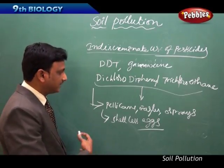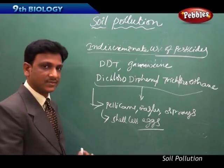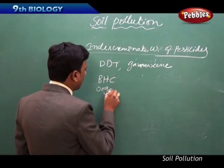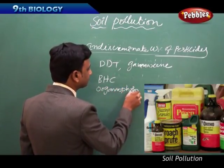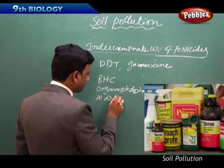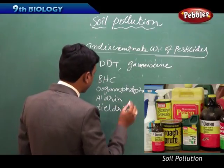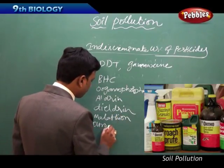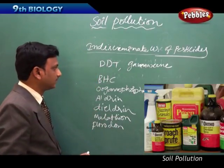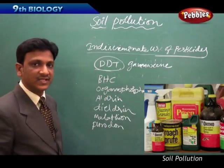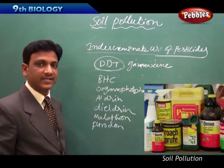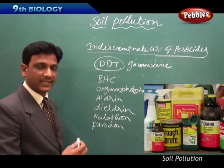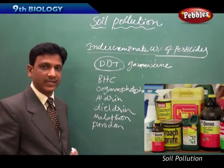They cause problems to living organisms, either to plants or to human beings. Apart from DDT, there are certain other pesticides like BHC, Organophosphates, Aldrin, Dieldrin, Malathion, and Furodon. Different kinds of chemical pesticides are there. Certain pesticides were banned in certain countries - like in the USA, they banned DDT completely. But the USA is still manufacturing the compound for export to other countries.